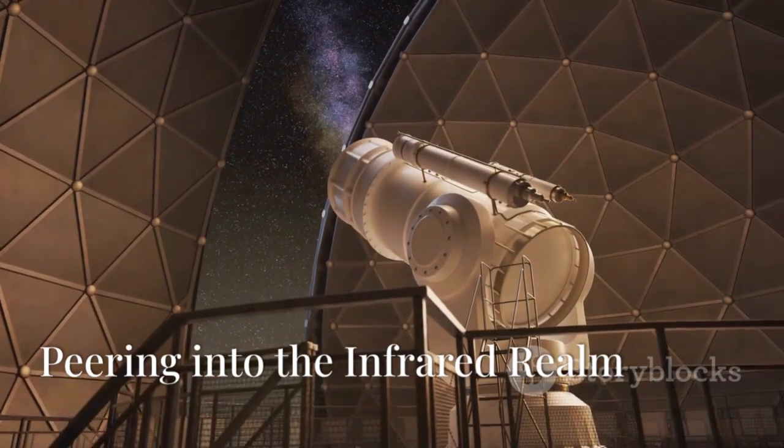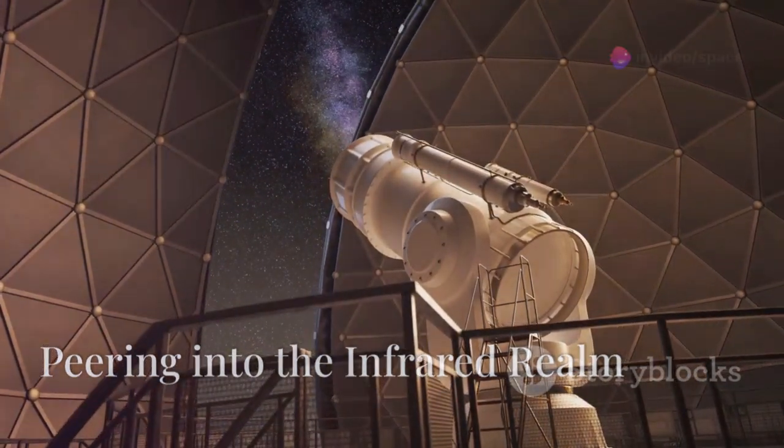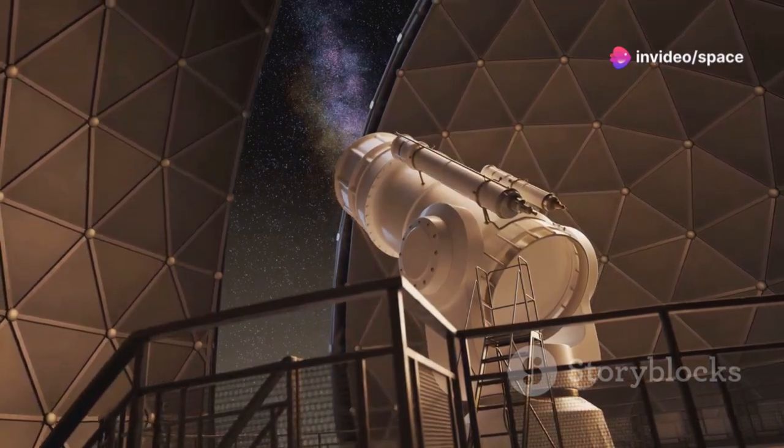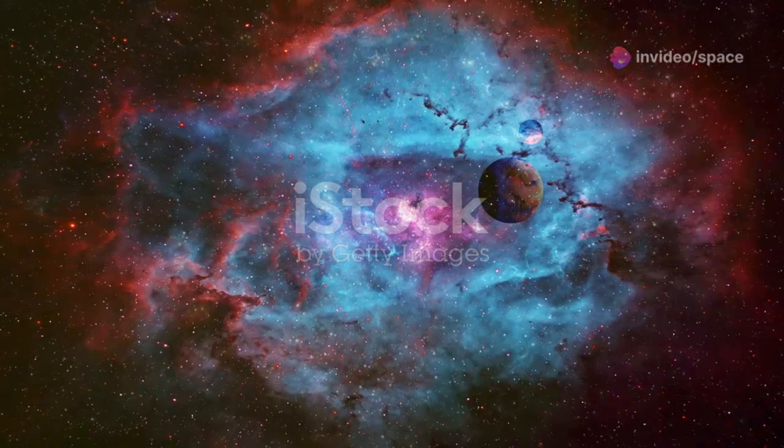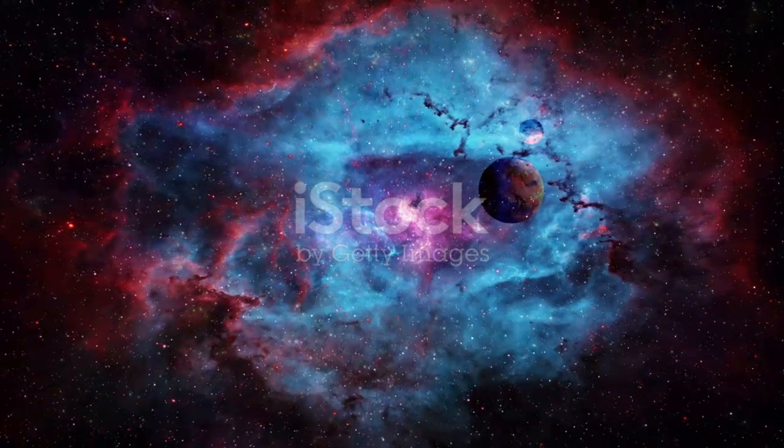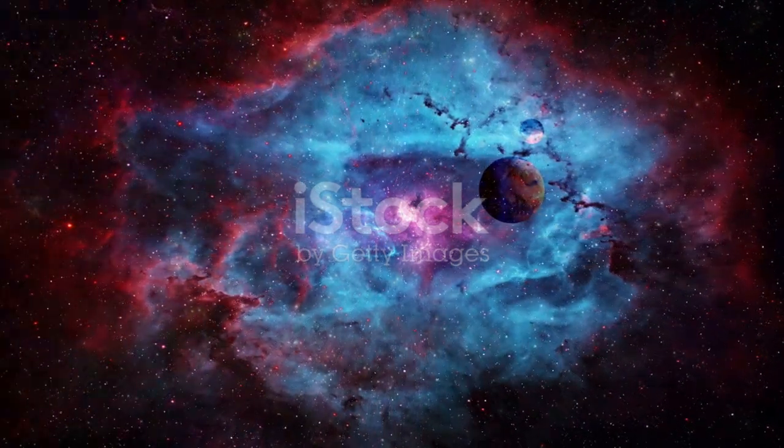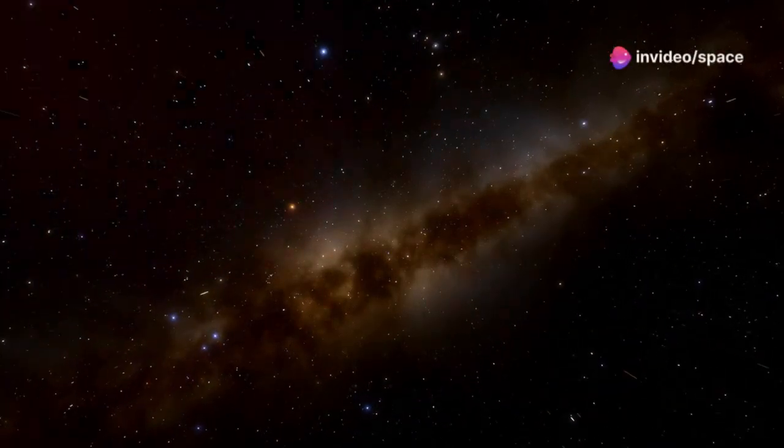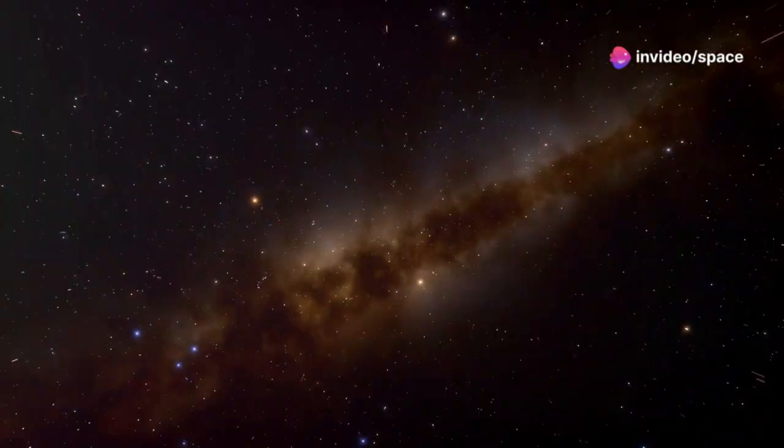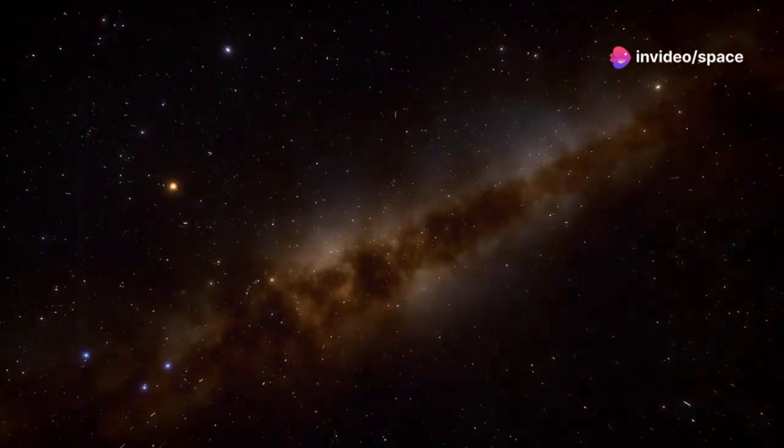The James Webb Space Telescope possesses a remarkable ability to see the universe in infrared light. This is crucial for several reasons. Infrared light can penetrate clouds of gas and dust that obscure visible light, allowing JWST to peer into the hearts of star-forming regions. It can also observe the most distant galaxies, so far away that their light has been stretched into the infrared part of the spectrum.